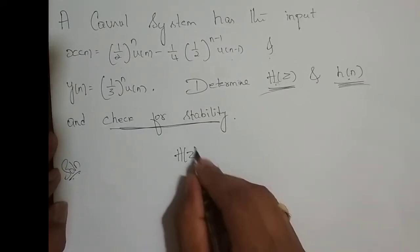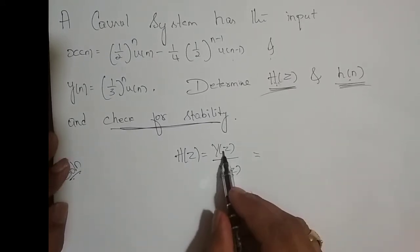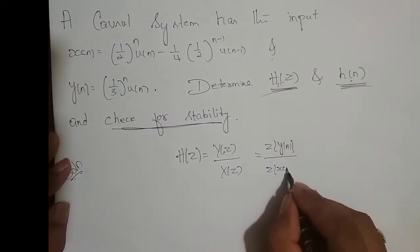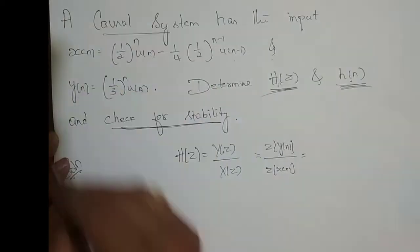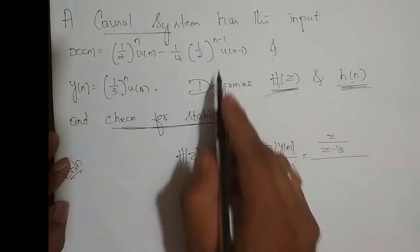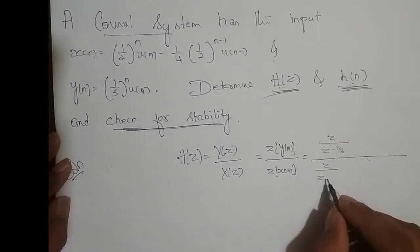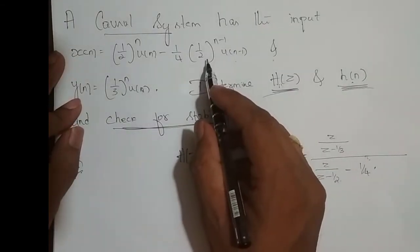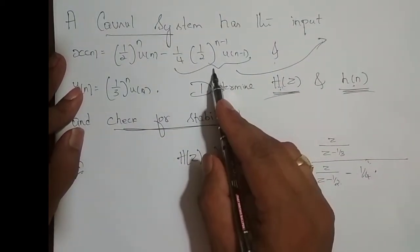H(z) is Y(z) divided by X(z). So Y(z) is the Z-transform of y(n), and X(z) is the Z-transform of x(n). The Z-transform of (1/3)^n u(n) for a causal system is z divided by (z minus 1/3). The input x(n) contains (1/2)^n u(n), giving Z-transform z divided by (z minus 1/2), minus 1/4 times the next term.